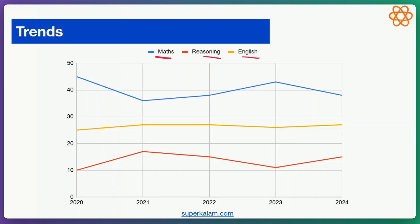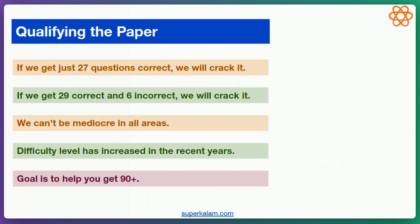So that has been roughly the pattern and the trends in the CSAT paper. Our focus is to qualify the paper. Our focus is not to get 200 out of 200 or even 150 out of 200 in CSAT — though if we get 150, that's great. But our first and most important target is to qualify the paper.